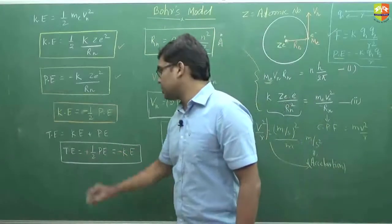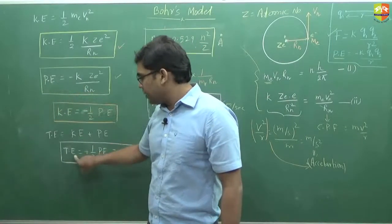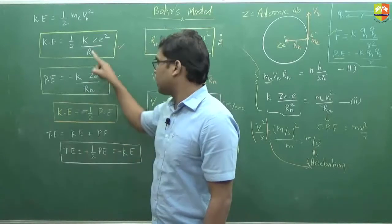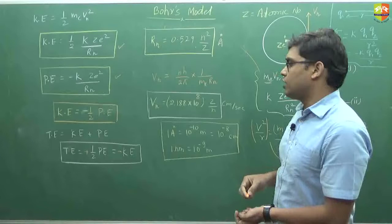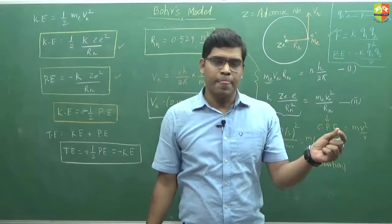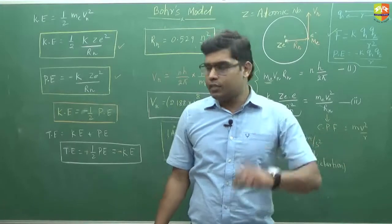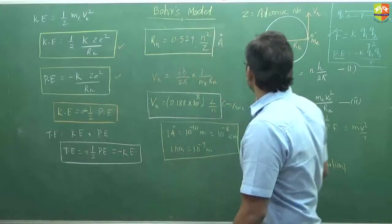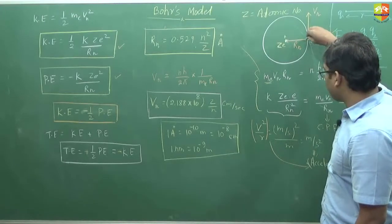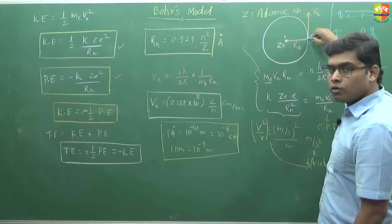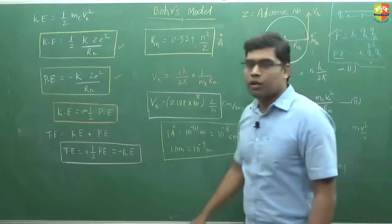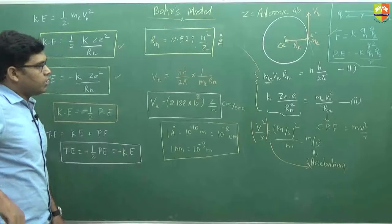The total energy is negative because potential energy is negative and total energy equals positive half of PE, meaning it carries that negative sign, while kinetic energy is positive. The significance of total energy being negative is: when you place an electron at this orbit, work done is stored as potential energy, so it is negative. If you provide energy to take this electron out, positive energy and negative energy cancel out, and at that moment the electron becomes free from the nucleus and comes out of the orbit.